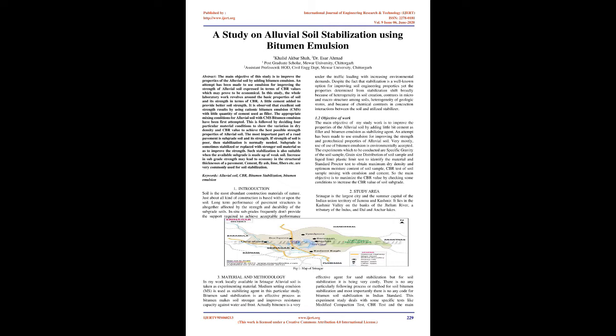In this study, the whole laboratory work revolves around the basic properties of soil and its strength in terms of CBR. A little cement is added to provide better soil strength. It is observed that excellent soil strength results from using cationic bitumen emulsion (CMS) with a little quantity of cement used as filler. The appropriate mixing conditions for alluvial soil with CMS bitumen emulsion have been first attempted, followed by deciding four particular material conditions to show the variation in dry density and CBR value to achieve the best possible strength properties of alluvial soil.